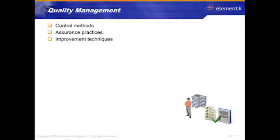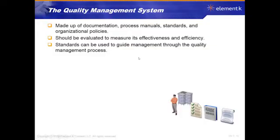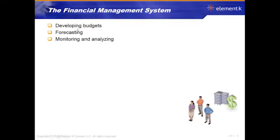Another thing we need to look at is quality management, because businesses are worried about quality — not only of the products they put out, but also the quality of their processes. We're looking at control methods for quality management, assurance practices, and what improvement techniques they have. The quality management system will be made up of documents, processes, and manuals. We should ask: is it effective and efficient? Are there standards guiding management through this process? There's also a financial management system for developing budgets, forecasting, and monitoring — and the IT department will have this as well.